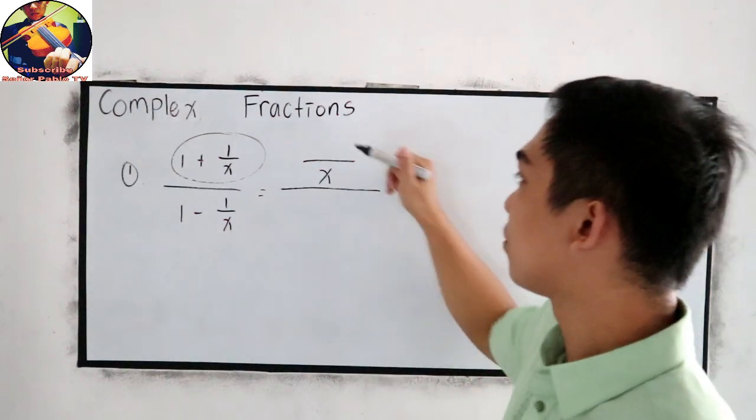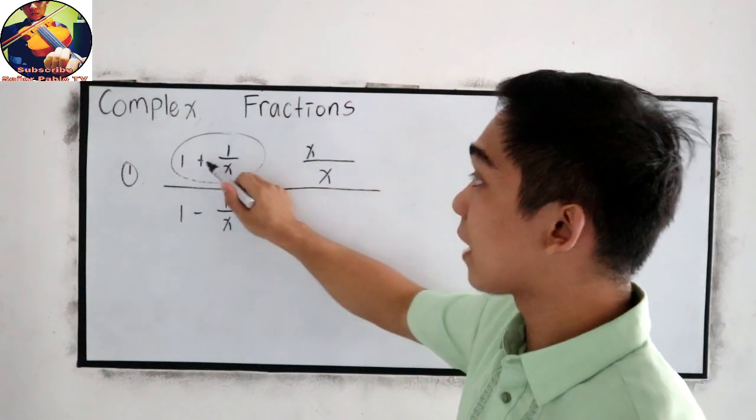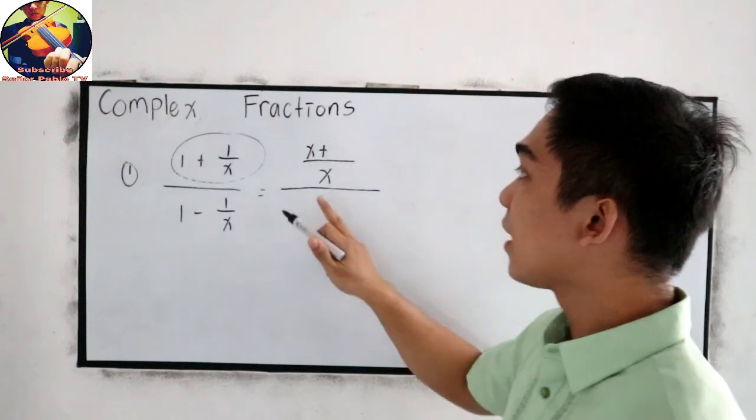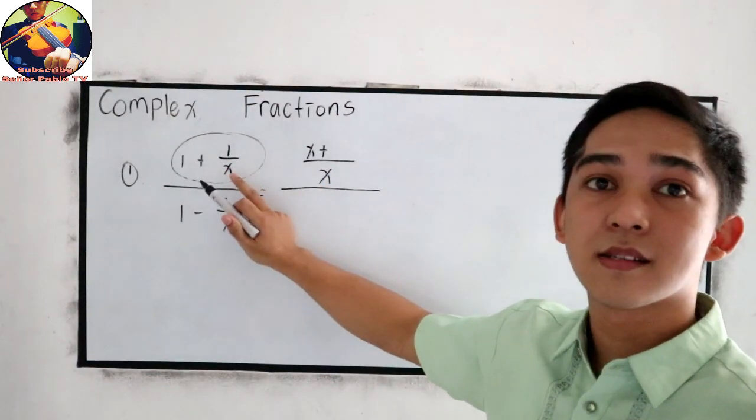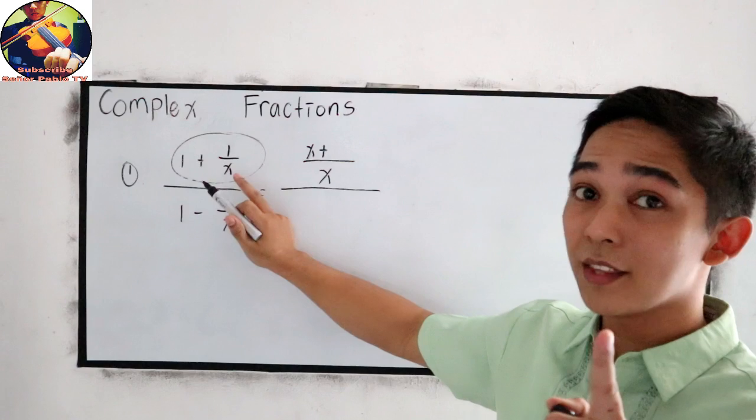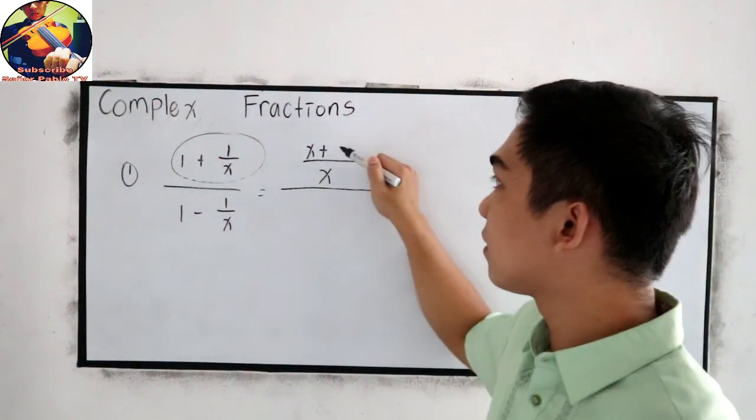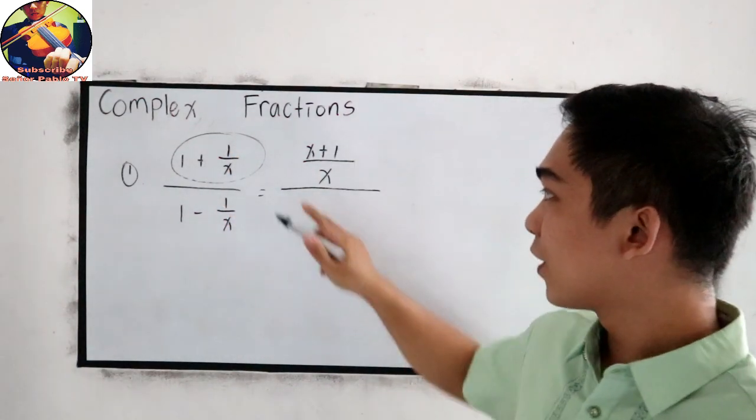So 1x or simply x. Copy the plus sign, x divided by x, that is 1. So 1 times 1 is 1.